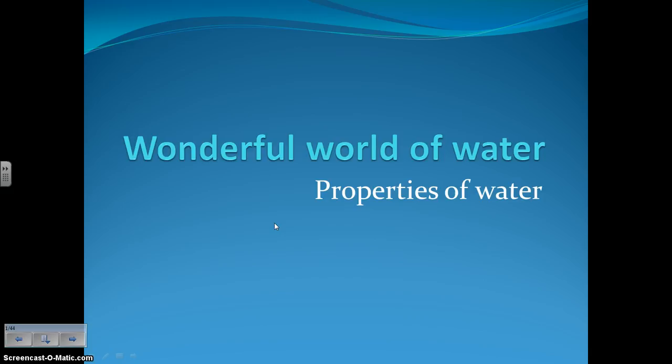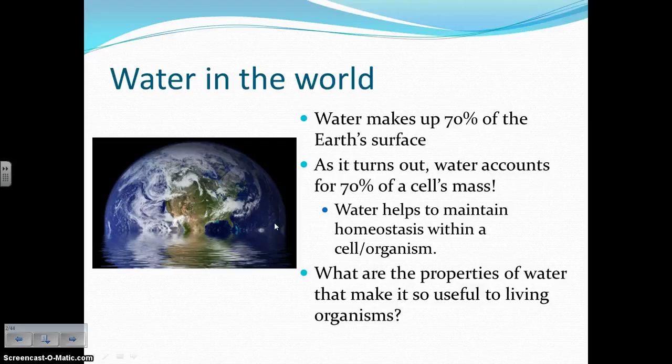We're going to start by talking about the properties of water. Water, this simple molecule, is so incredibly useful to living organisms. Water makes up about 70% of the Earth's surface, and as it turns out, that's about the exact same amount you'll find inside of a cell. Water helps to maintain that stable internal environment called homeostasis within a cell or an organism. Water is constantly traveling in and out of the cell, and therefore in and out of the organism, in order to maintain that stable environment.